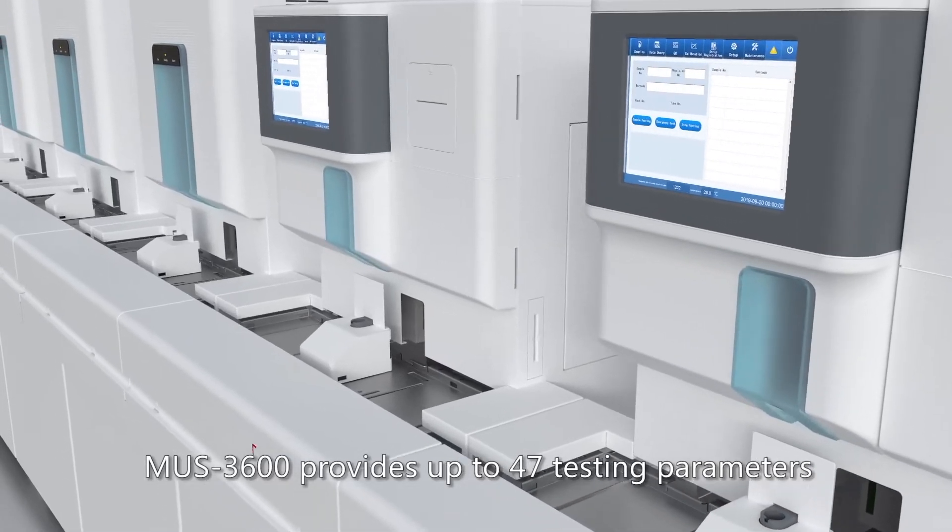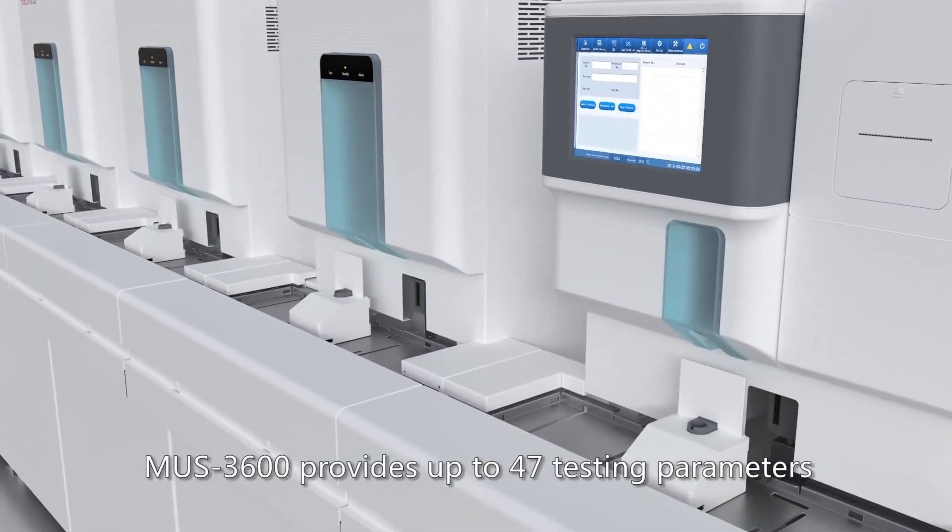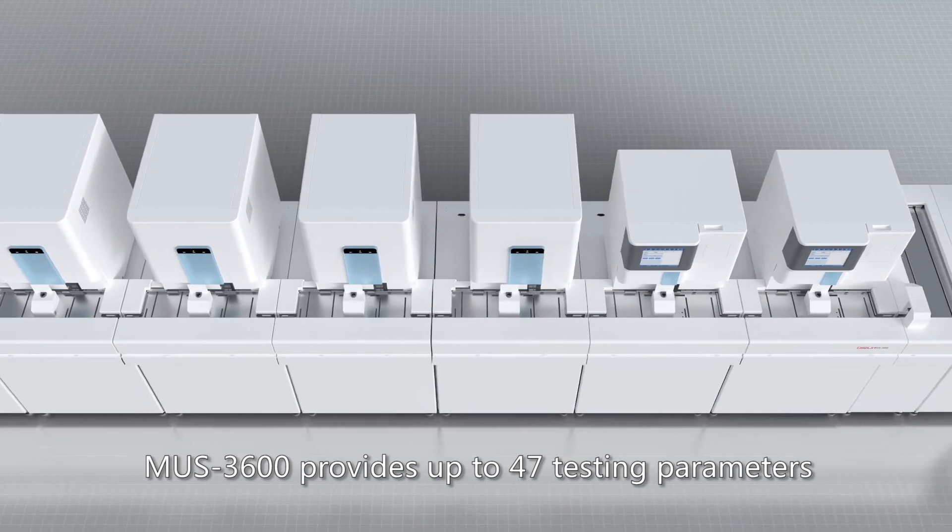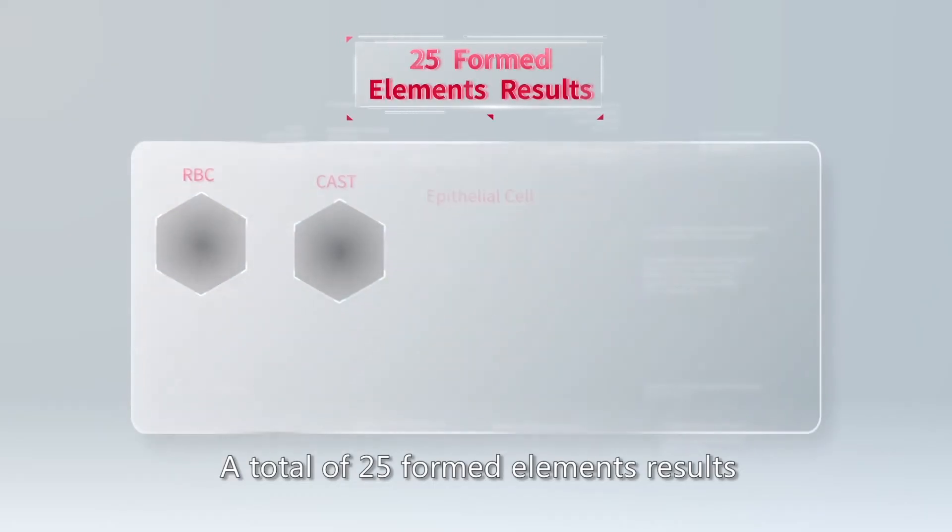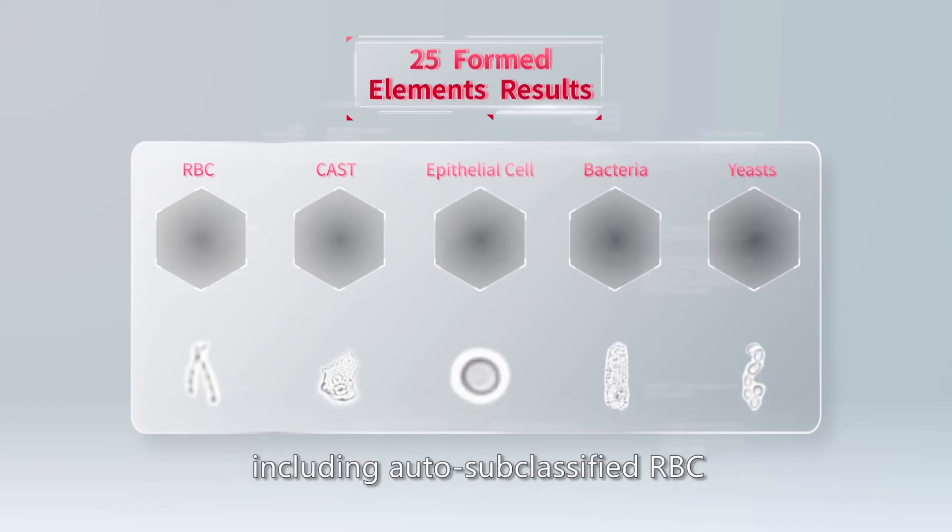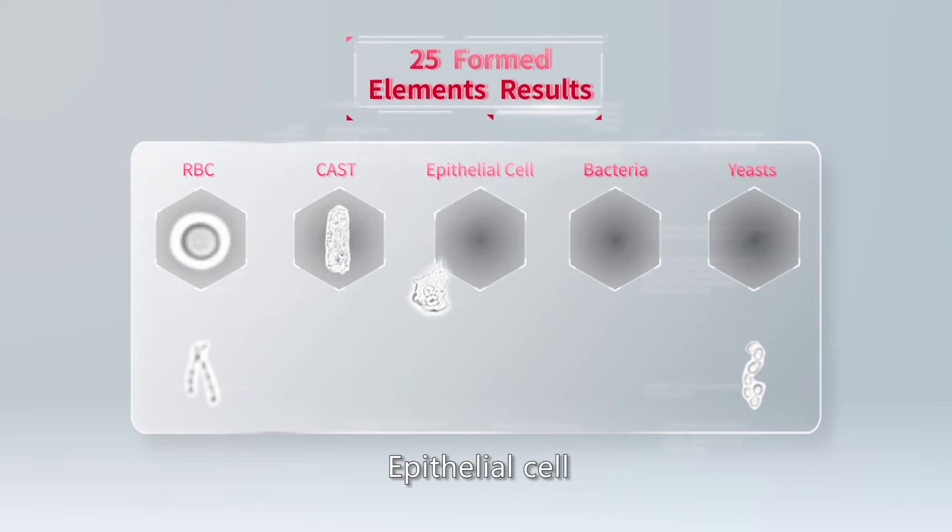MUS3600 provides up to 47 testing parameters for clearer clinical diagnosis, a total of 25 formed elements results, including auto-subclassified RBC, cast, and epithelial cell.